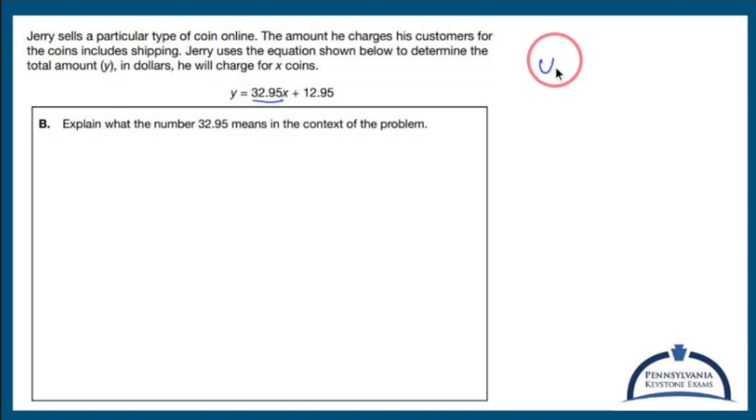When you have something in the form Y equals MX plus B slope intercept form, the slope is the number in front of X. Slope is also called rate of change. So miles per hour, feet per second, gallons per minute, whatever. In this case, it's going to be dollars per coin.